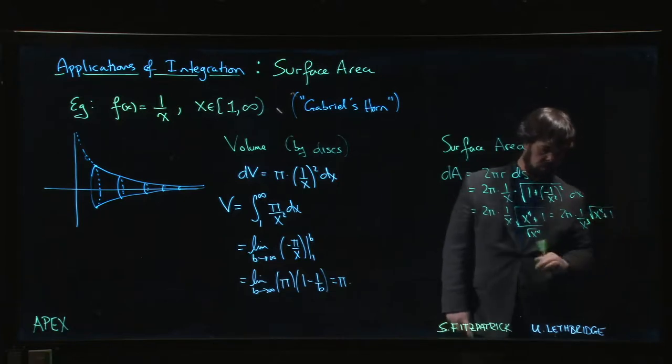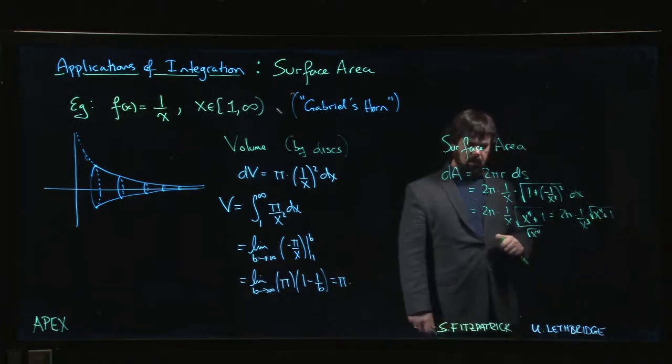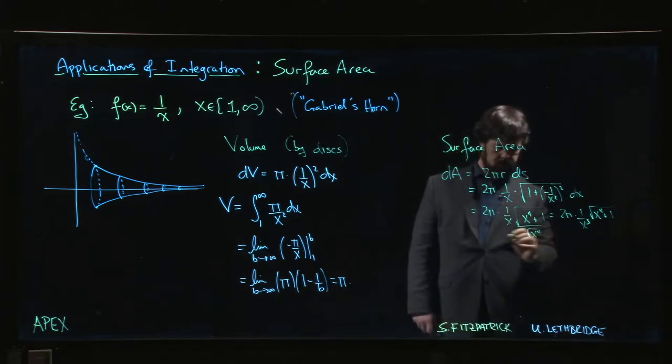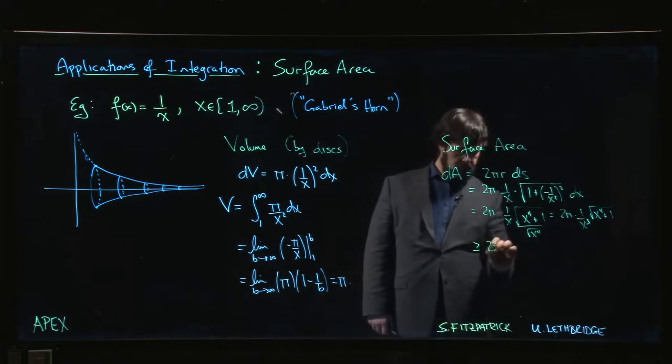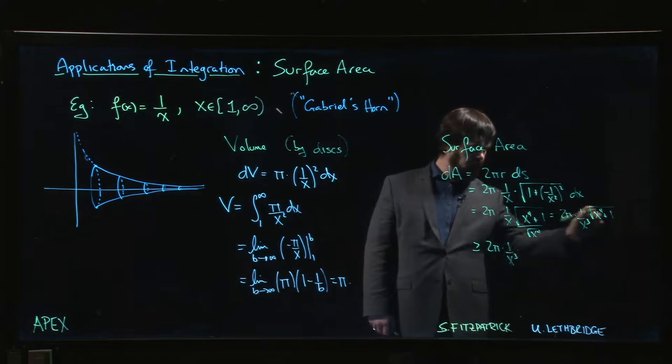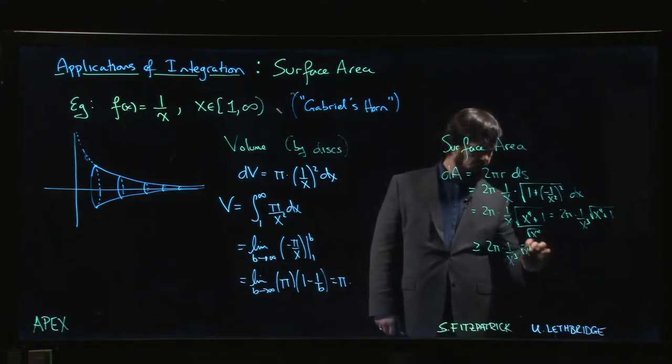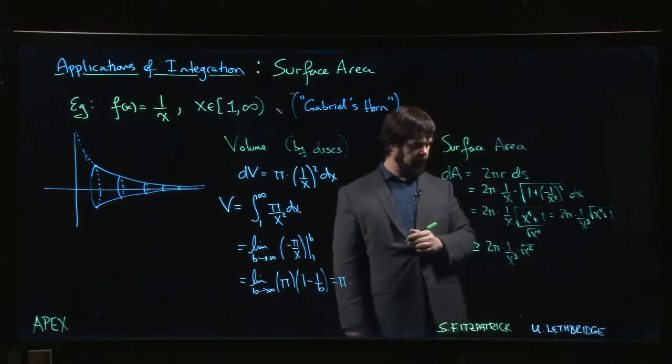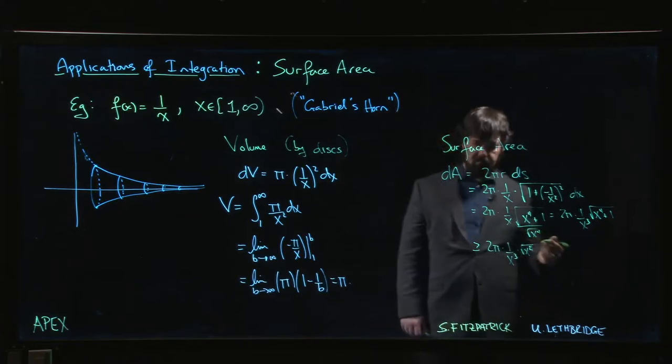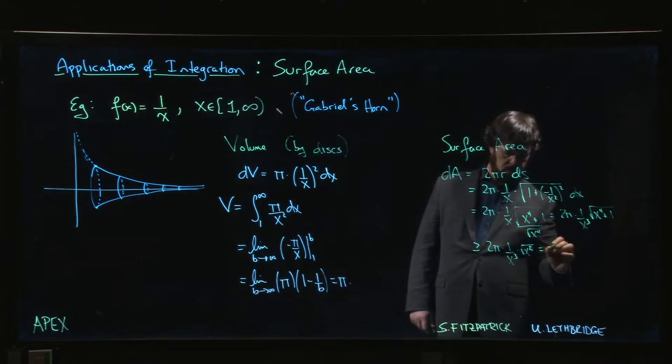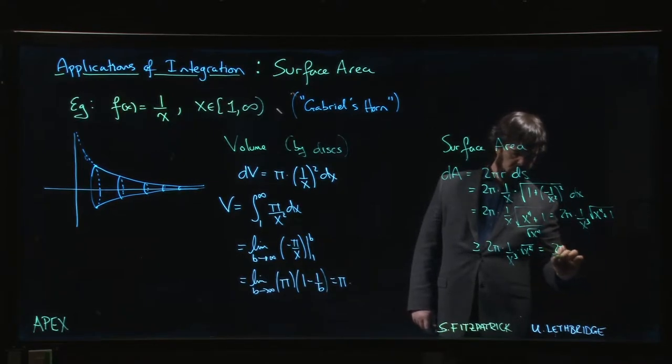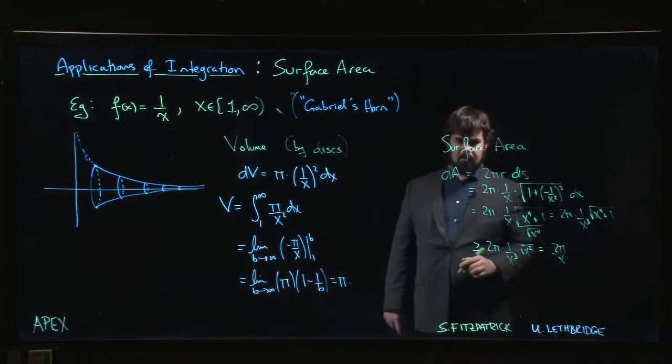Now that is slightly bigger than 2π times 1 over x³ times the square root of x⁴. Adding 1 makes it a little bigger. Square root of x⁴, well that's x². Slightly bigger than 2π over x.